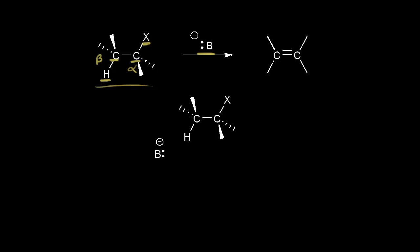All four of those atoms must be in the same plane — this hydrogen, this carbon, this carbon, and this halogen are all in the same plane, which is why the bonds are drawn as straight lines here. The hydrogen and the halogen must be on opposite sides if you draw a line through the carbon-carbon bond, and that's said to be anti. So for this mechanism, we need anti-periplanar hydrogen and halogen: the hydrogen and halogen are anti to each other and they are in the same plane.